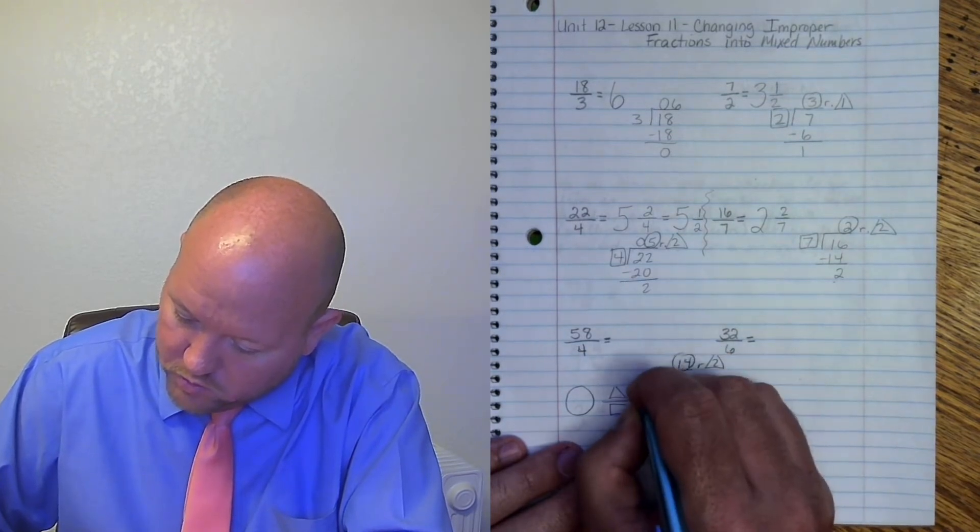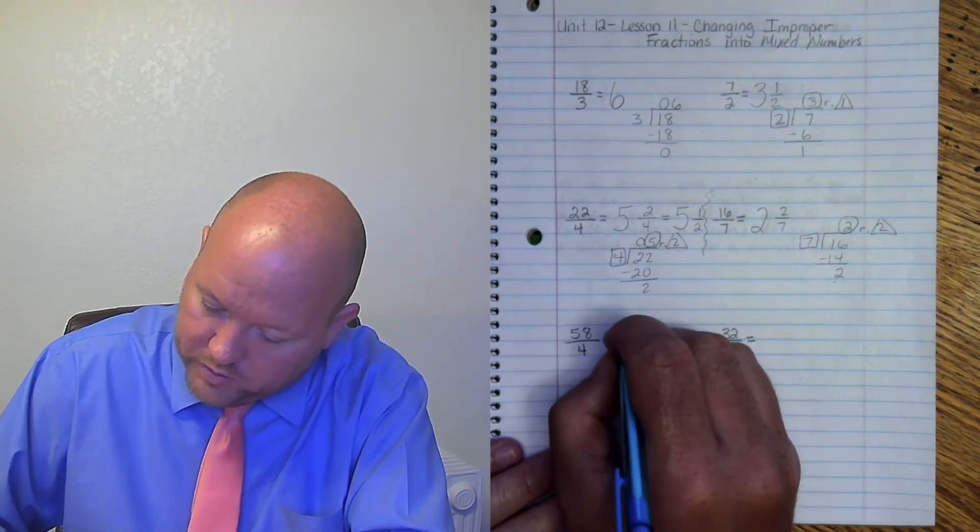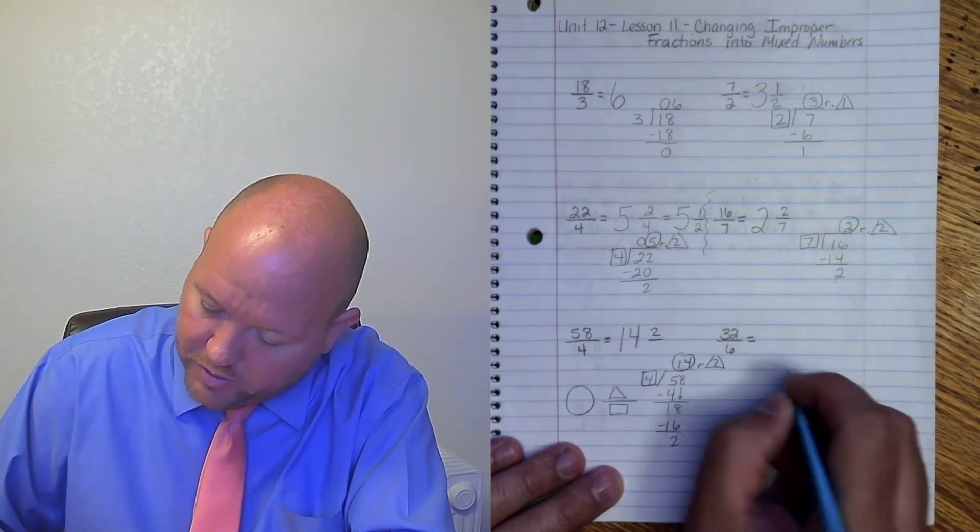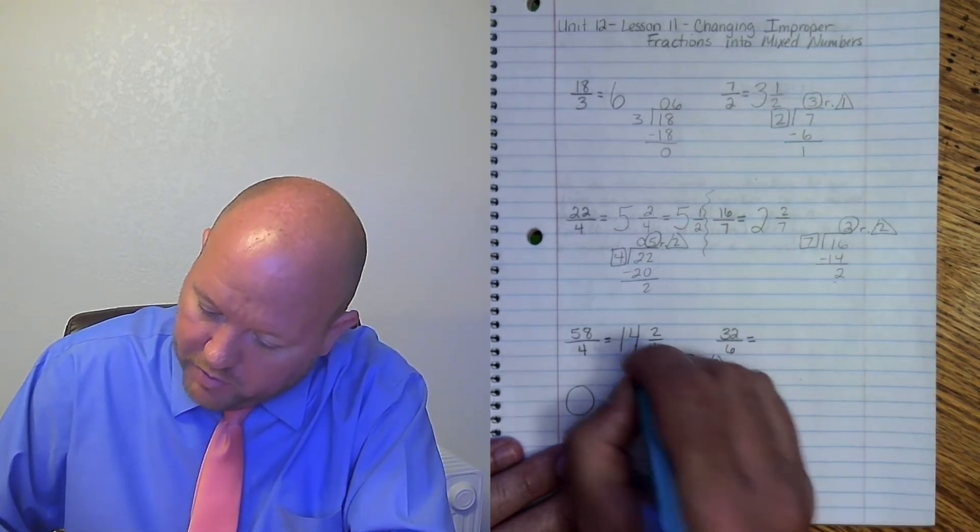Triangle circle square. So 14 is my whole number. 2 is my numerator. 4 is my denominator.